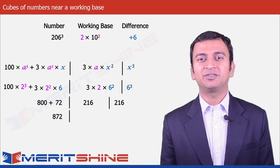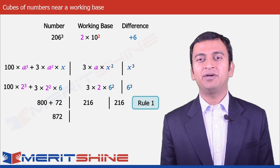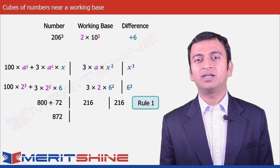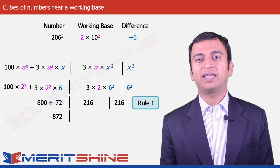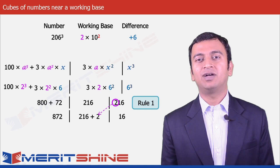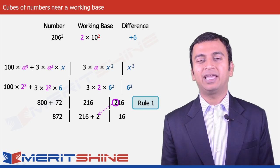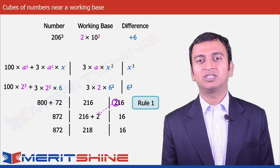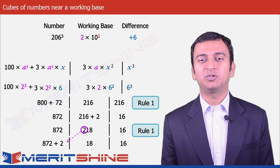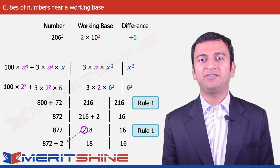Here comes Rule 1, which says the number of digits in the second and third parts must equal the number of zeros in our base. So the 2 in 216 of the third part is carried over to the second part, making it 216 plus 2 = 218, leaving 16 in the third part. Again, 218 in the second part gives its 2 to the first part, making 872 plus 2 = 874.